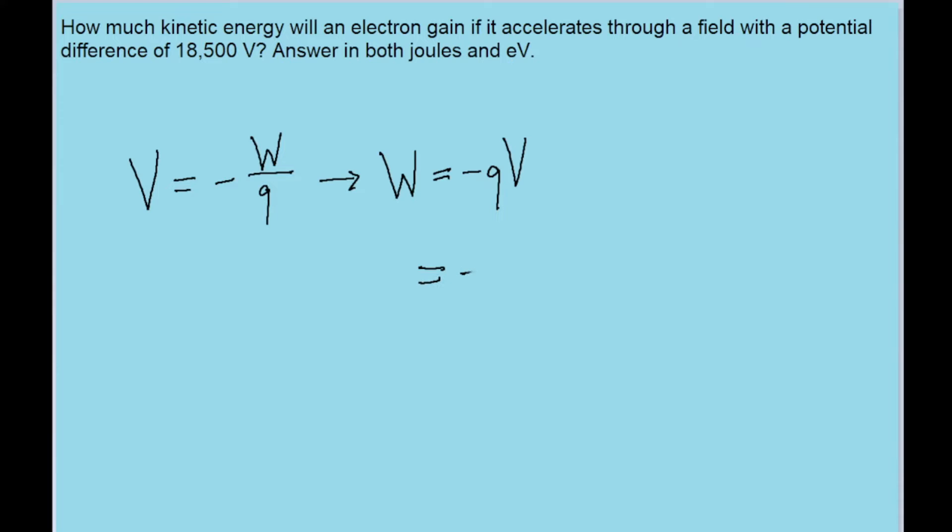Now let's put in the values we have. The charge of an electron is equal to negative 1.6 times 10 to the power of negative 19 Coulombs. And the potential difference is given to us in the problem, that's 18,500 volts.